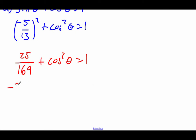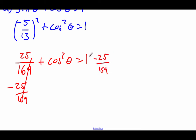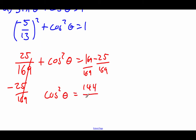Now if we subtract the 25 over 169 over to the other side — common denominators, this is going to end up being 169 over 169 — so we get the cosine squared of theta equals 144 over 169.